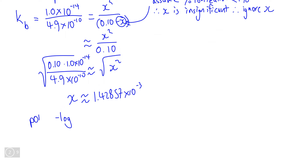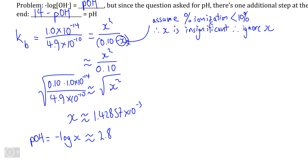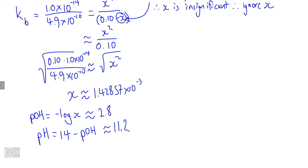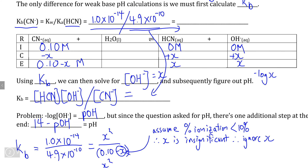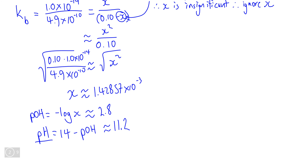We know that pOH equals the negative log of X, which comes to approximately 2.8 when we round to two significant digits. But we remember that we weren't asked for pOH — we were asked for pH. We know that pH equals 14 minus pOH, which approximately equals 11.2. Just to make sure we're in the ballpark, remember that we're calculating the pH of a basic solution, which means our pH value should be greater than 7, and that is indeed what we see.